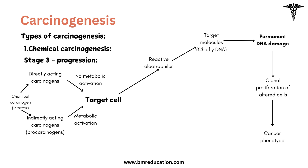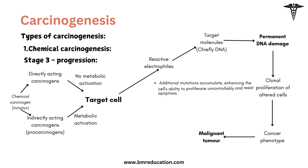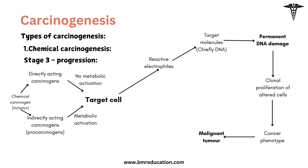The final stage is progression. Here, the initiated and promoted cells undergo further genetic changes leading to malignancy. Key features include development of a more aggressive phenotype, where cells show characteristics of malignancy like invasiveness and metastasis. Additional mutations accumulate, enhancing the cell's ability to proliferate uncontrollably and resist apoptosis. The tumor becomes more autonomous, less dependent on external growth factors, and can invade surrounding tissues and metastasize. This stage marks the transition from a pre-cancerous state to full-blown cancer.